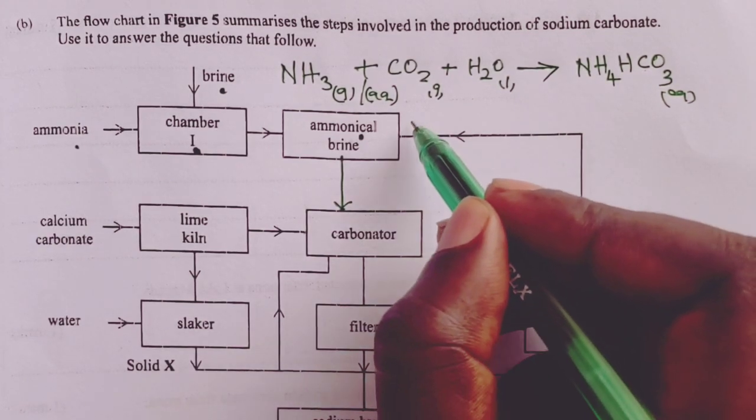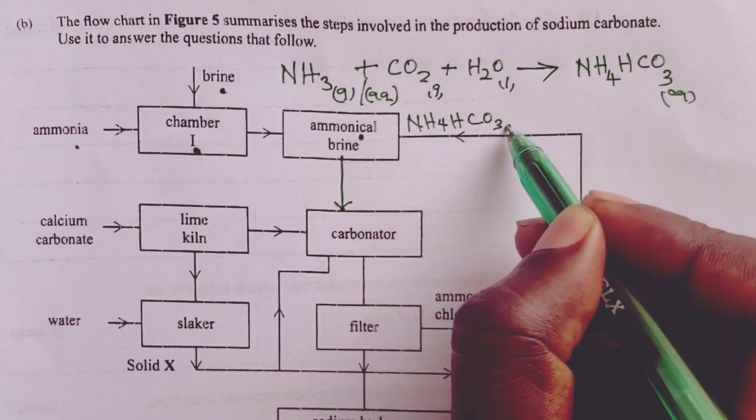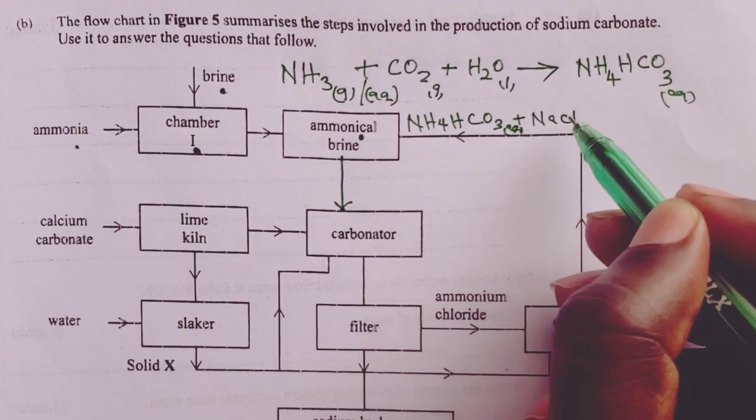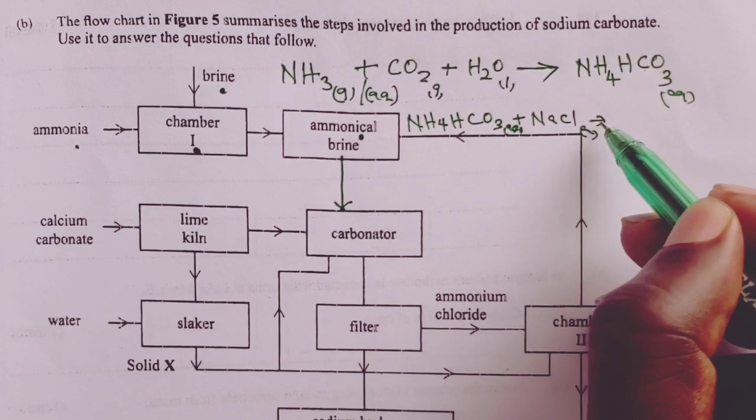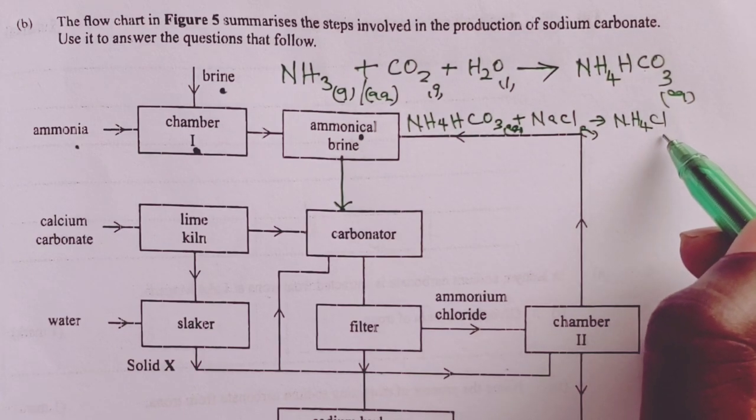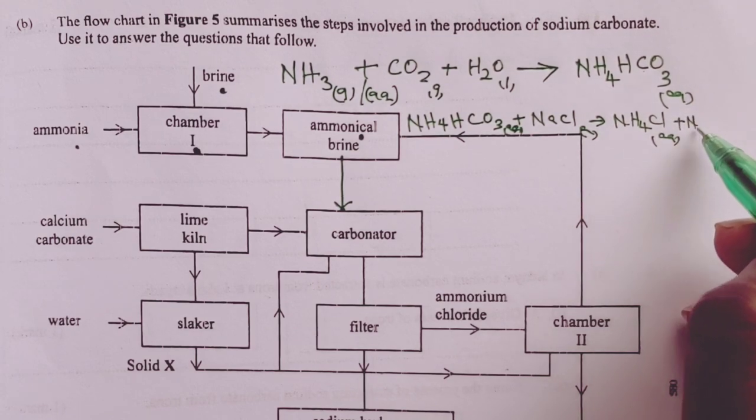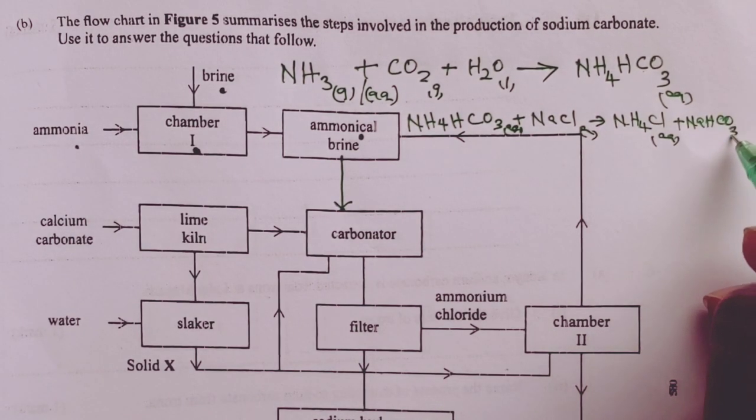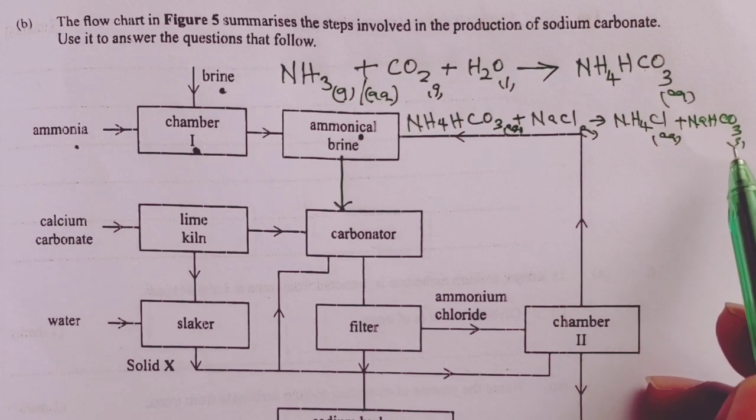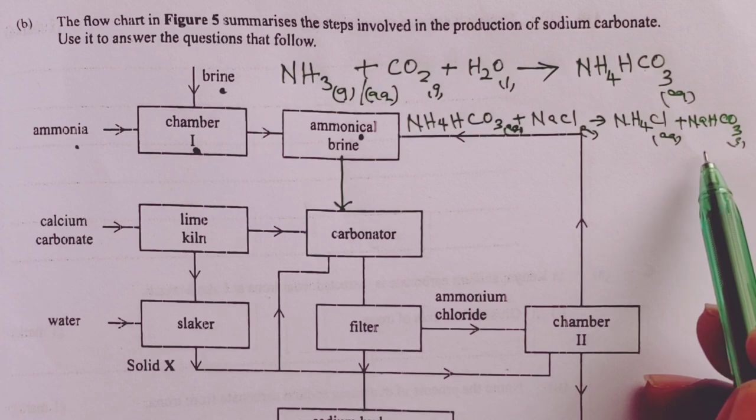This becomes the first equation for the reaction in the carbonator. Now, immediately the ammonium hydrogen carbonate is formed, it usually reacts with the sodium chloride from brine. And we get ammonium chloride, which we shall use aqueous as the state, and sodium hydrogen carbonate. We shall use solid as the state because these two substances are separable by a simple process as filtration.